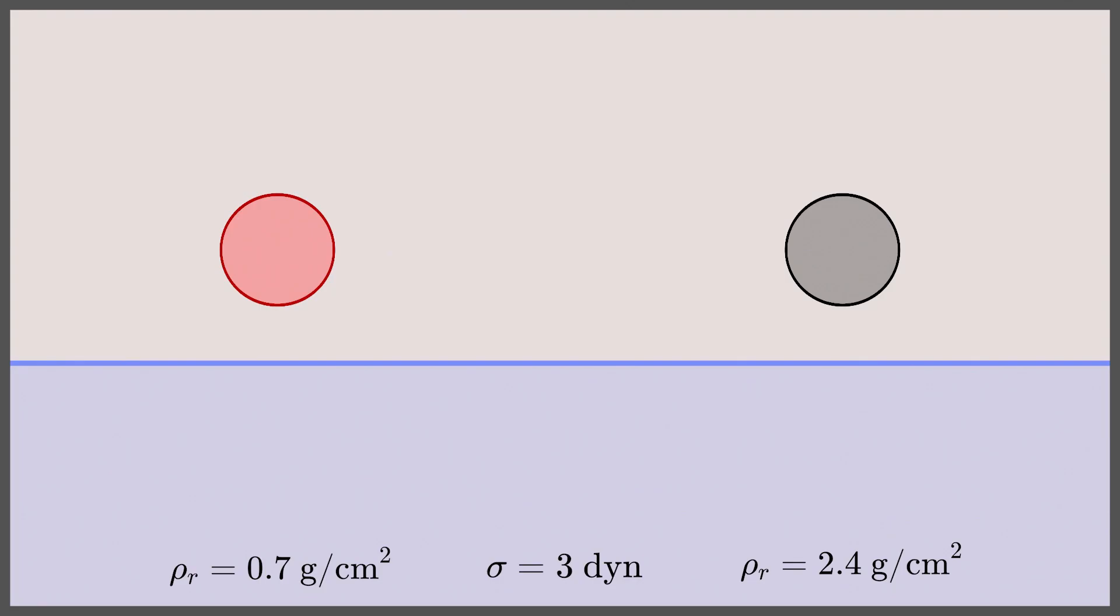By solving this three-way coupling system, we can model strong surface tension phenomena, such as dropping a circle that can bounce on the fluid surface.